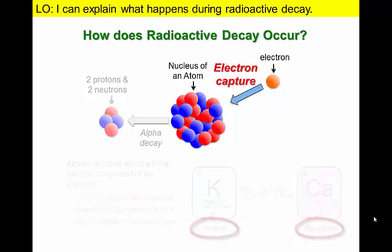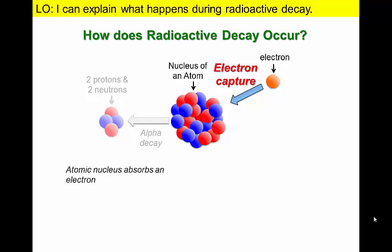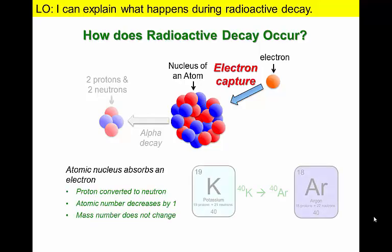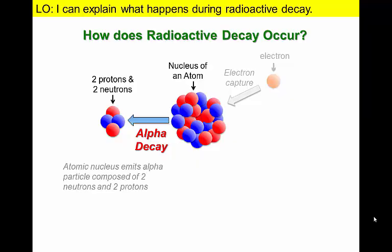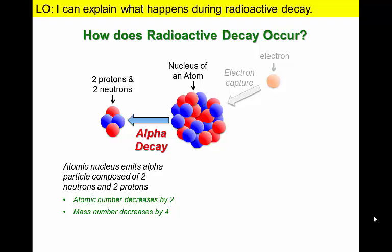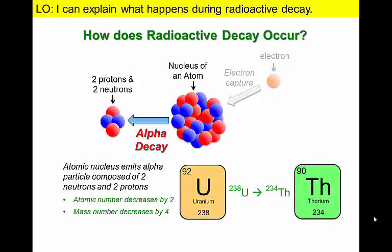The opposite occurs during electron capture — an electron is absorbed by the nucleus to change a proton to a neutron. For example, this happens when an isotope of potassium is converted to argon. Finally, elements undergo alpha decay when an alpha particle, a combination of two neutrons and two protons, is ejected from the nucleus of an atom. When this happens to an isotope of uranium, it is converted to thorium. This is just one step in a lengthy series of changes that will eventually form a stable lead isotope.